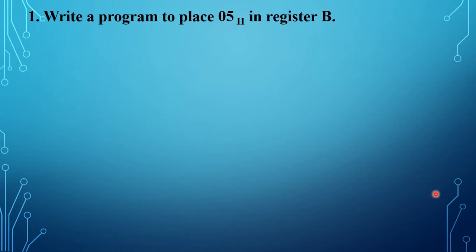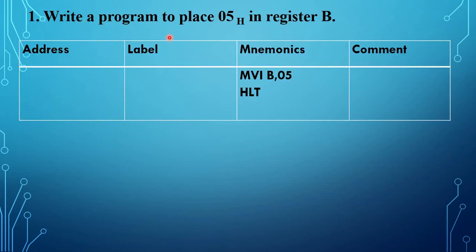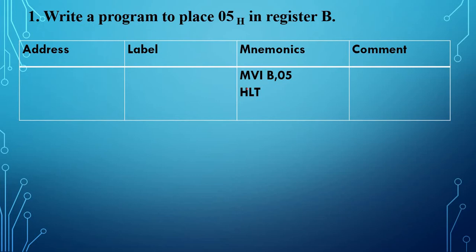Example 1: Write a program to place 0FFh in register B. Using the MVI B instruction, the 8-bit data 0FFh is immediately moved to the B register. Then the program stops.